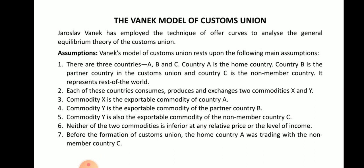Each of these countries consumes, produces, and exchanges two commodities, X and Y. Commodity X is the exportable commodity of country A. Commodity Y is the exportable commodity of the partner country B, and commodity Y is also the exportable commodity of the non-member country C. Neither of the two commodities is inferior at any relative price or level of income.